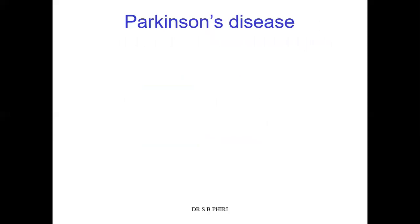Let's start by looking at Parkinson's disease. You may have discussed this disease in pathology already, so I'm not going to spend too much time on details. I'm interested in the physiology point of view — how does it come about, what structures are affected, and why do we appreciate these clinical signs?